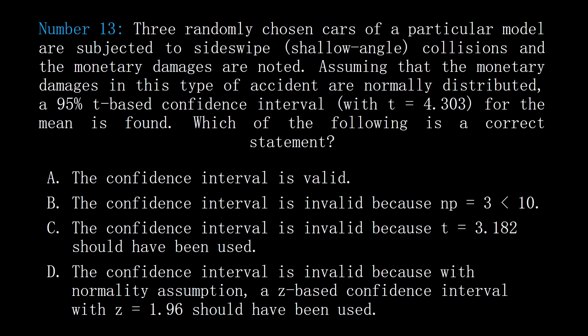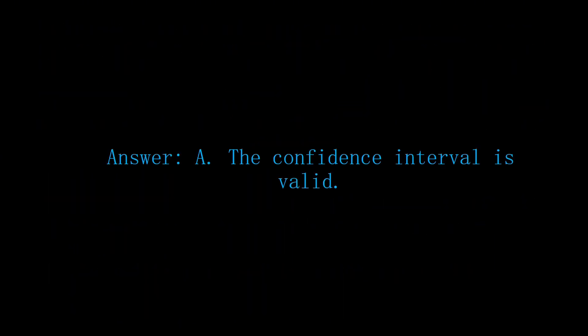Number 13. Three randomly chosen cars of a particular model are subjected to sideswipe shallow angle collisions and the monetary damages are noted. Assuming that the monetary damages in this type of accident are normally distributed, a 95% t-based confidence interval mean with t equal to 4.303 is found. Which of the following is a correct statement? A: the confidence interval is valid. B: the confidence interval is invalid because n equals 3, which is less than 10. C: the confidence interval is invalid because t equal to 3.182 should have been used. D: the confidence interval is invalid because with normality assumption, a z-based confidence interval with z equal to 1.96 should have been used. Answer: A, the confidence interval is valid.